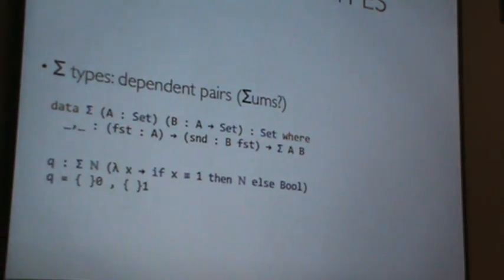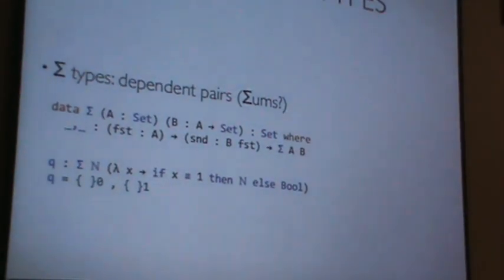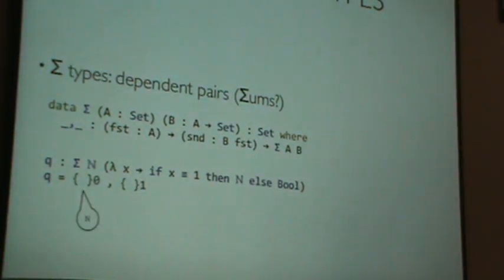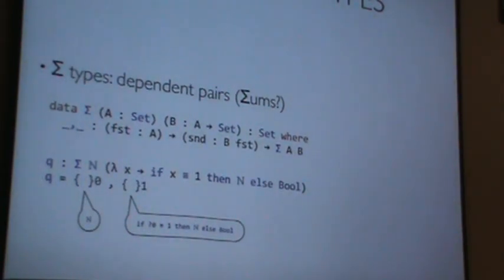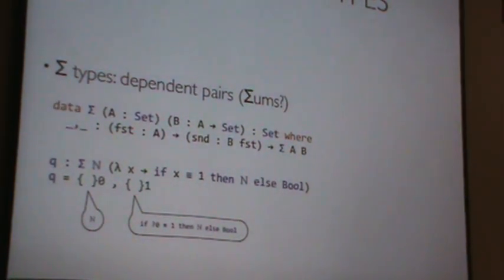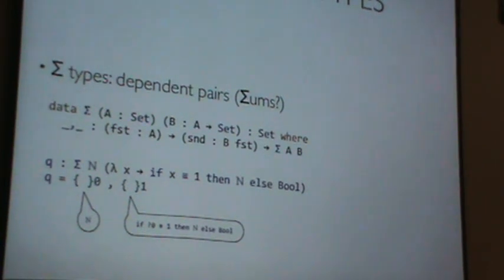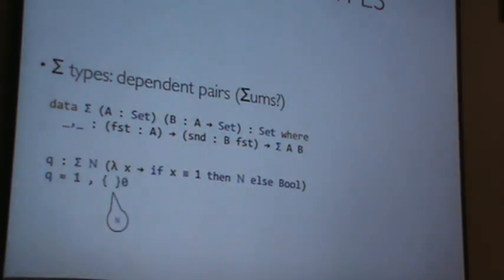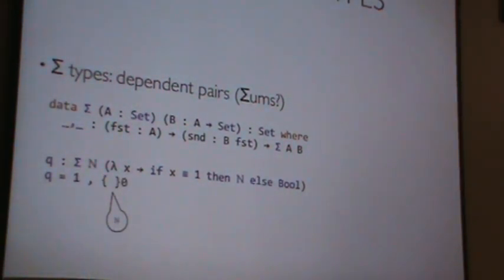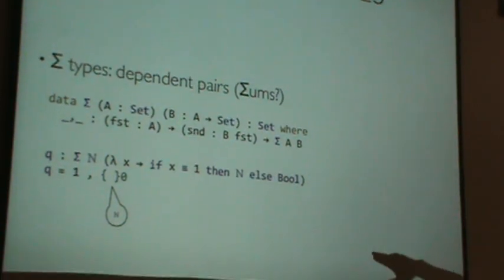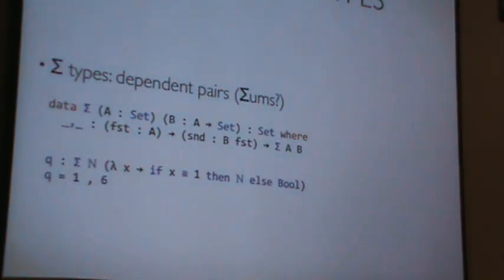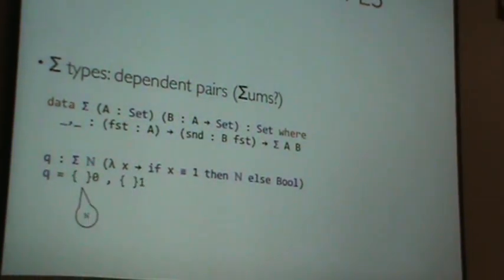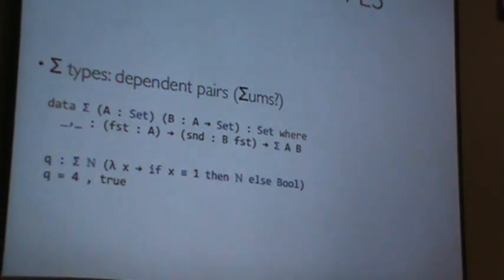Another completely contrived example. Looking at the types of the holes here, we have a natural there, and the type of the second component isn't yet determined. It will be determined by what we stick into the first argument. If I stick in a 1, now this guy refines to a natural, simply because if true, then natural. So I can write that in and it would be well-typed. However, if I've gone back and written something else in there, like 4, that would be a type Boolean, and that would also be well-typed.